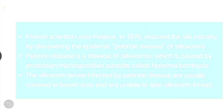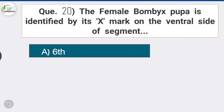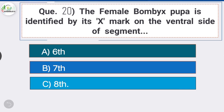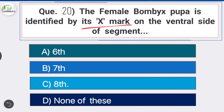Question number twenty: the female Bombyx pupa is identified by its X mark on the ventral side of which segment? Option C is the correct answer — the eighth segment. The female Bombyx pupa has a fine longitudinal line, which is the X mark, on the ventral side of the eighth abdominal segment.